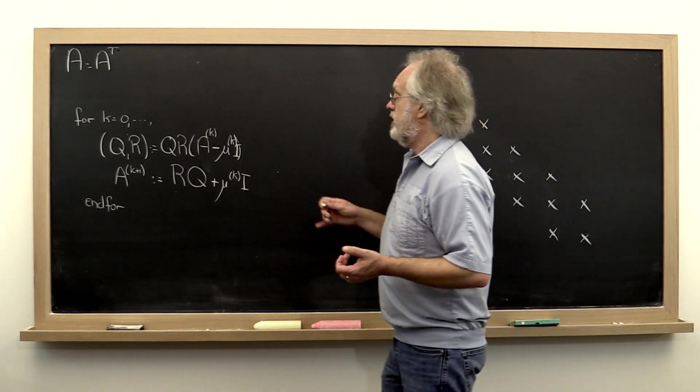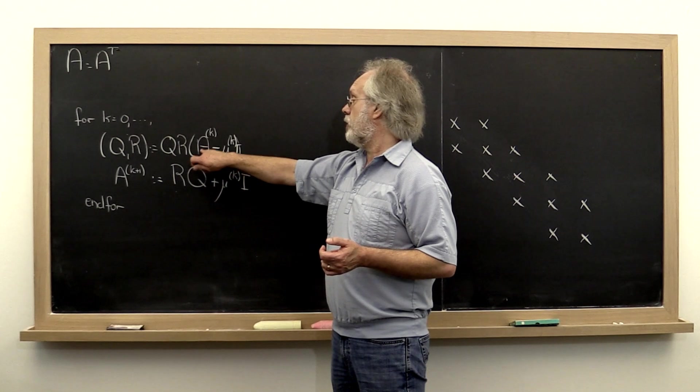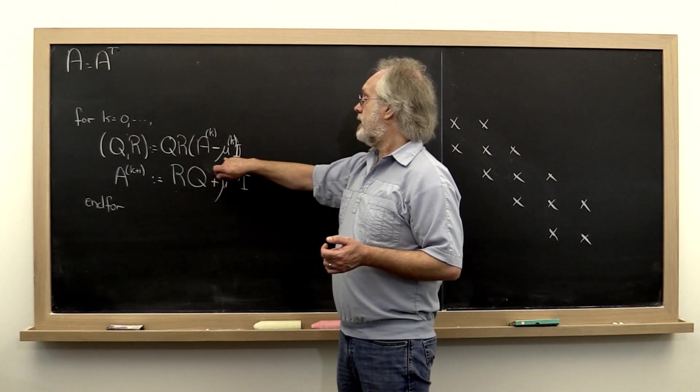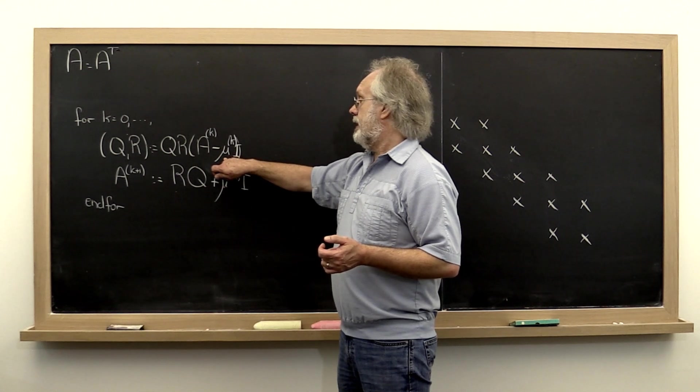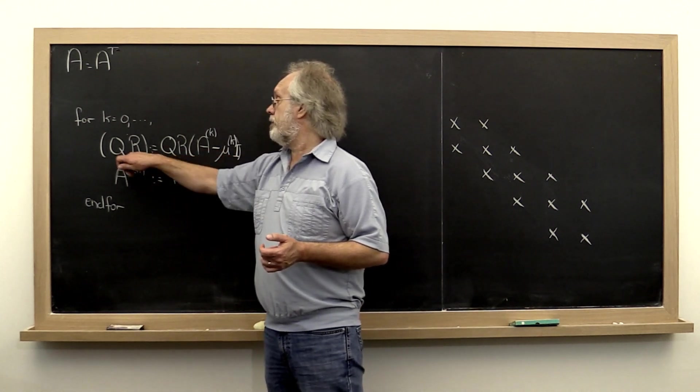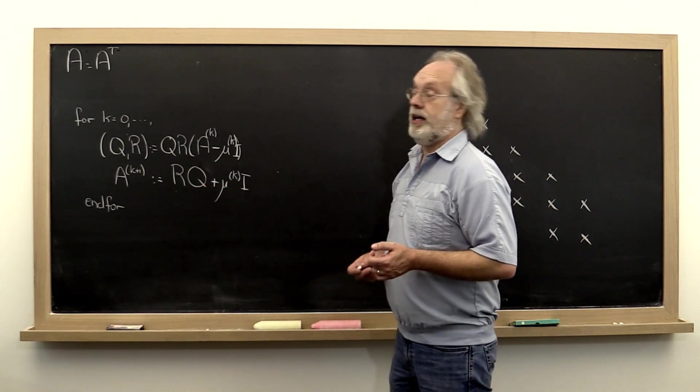What did the shifted QR algorithm look like? Well, we take our matrix A, our current iterate, we subtract off mu k from its diagonal. Once we have computed its QR factorization, then we do R times Q and we add that back in.